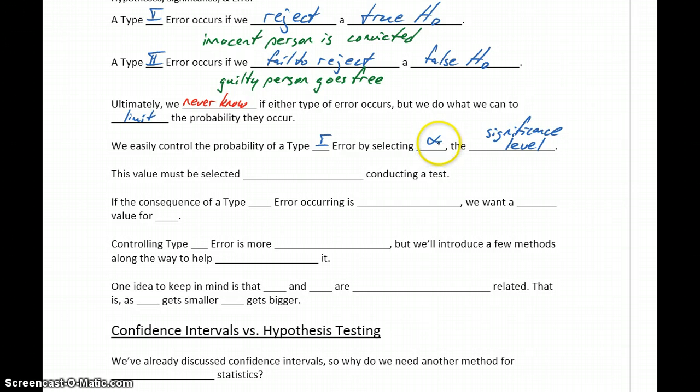Many problems we encounter are going to provide you with a value for alpha that you should use for the test. But if you're doing research on your own or when an independent researcher is researching something, they have to choose that value for alpha. There's some strategy that goes into it, but essentially by setting that value for alpha, we control the probability that Type I error will occur. We do need to keep in mind that value needs to be selected before conducting a test as a way to avoid introducing bias to the test.